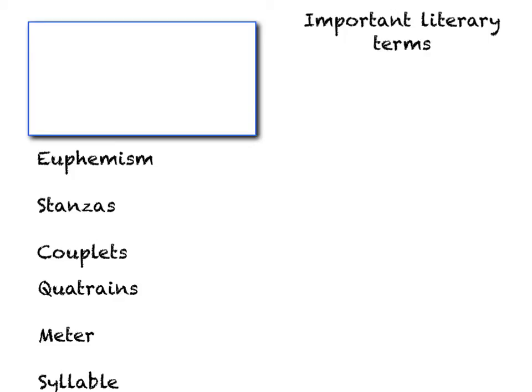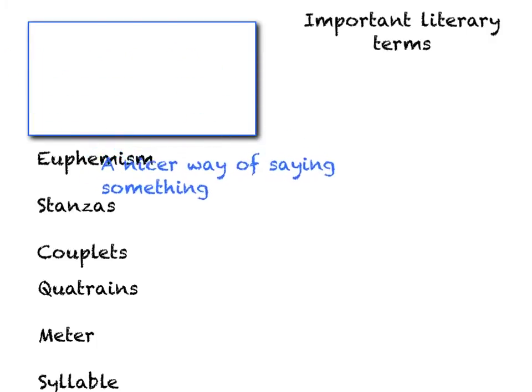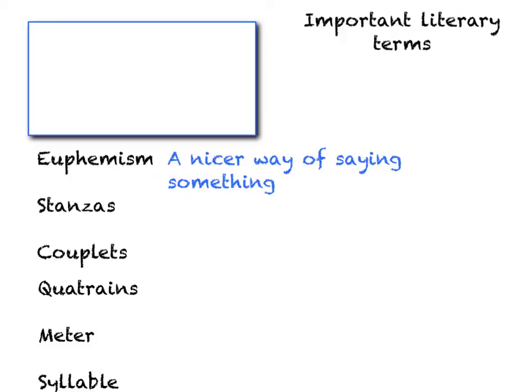The next category covers terms that don't comfortably fit into either figurative language or sound devices. These are often the literary terms that make up what a poem is. First up is euphemism — simply a nicer way of saying something. So instead of saying he sweated all over the place, you'd say he perspired.